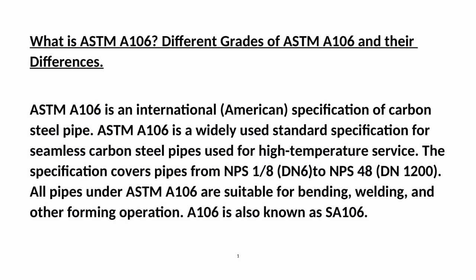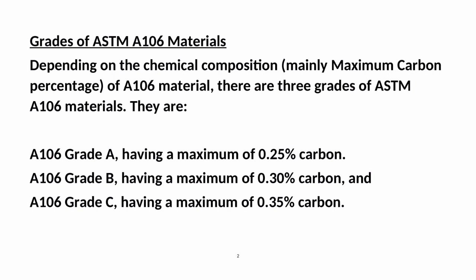A-106 is also known as SA-106. Depending on the chemical composition, mainly the maximum carbon percentage, there are three grades of ASTM A-106 materials: Grade A with a maximum of 0.25% carbon, Grade B with a maximum of 0.30% carbon, and Grade C with a maximum of 0.35% carbon.